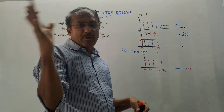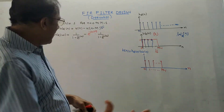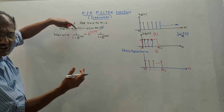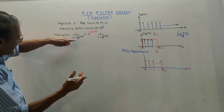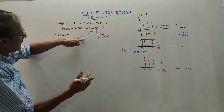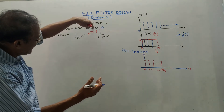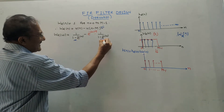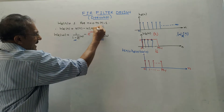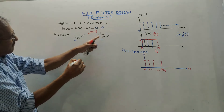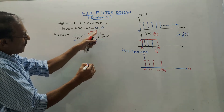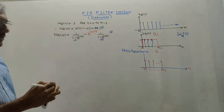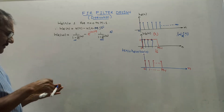For the derivation, memorize two simple formulas. The Fourier transform of the unit step U(n) is 1 divided by (1 minus e^{-jω}). For U(n minus M) — a unit step delayed by M samples — write the same equation and multiply by e^{-jωM}. With only these two equations memorized, you can derive the entire result.